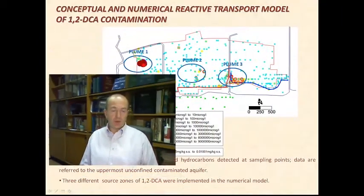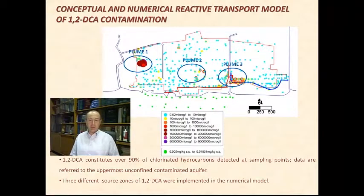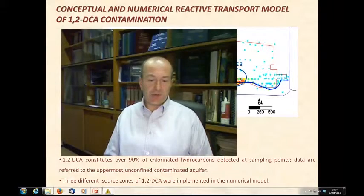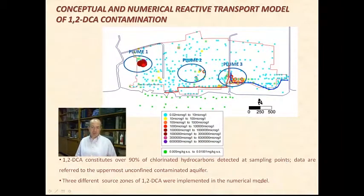But as a final step of our case study, and as a final step of what type of other studies we can perform in such large and complex contaminated sites, we can lead to reactive transport model. In this case we realized a very detailed reactive transport model about chlorinate solvents and in detail about 1,2-DCA contamination, as I mentioned to you, which represents more than 90% of chlorinate hydrocarbons detected in the sampling points.